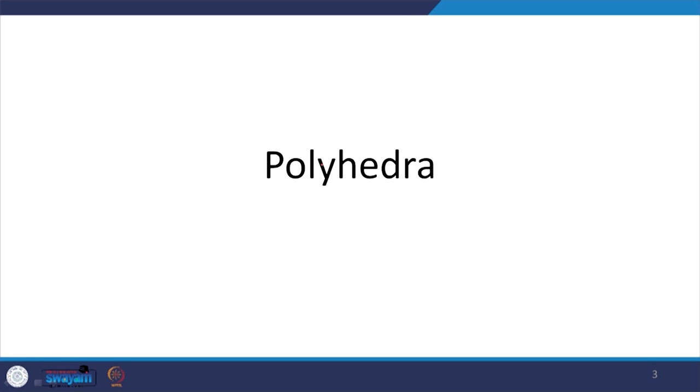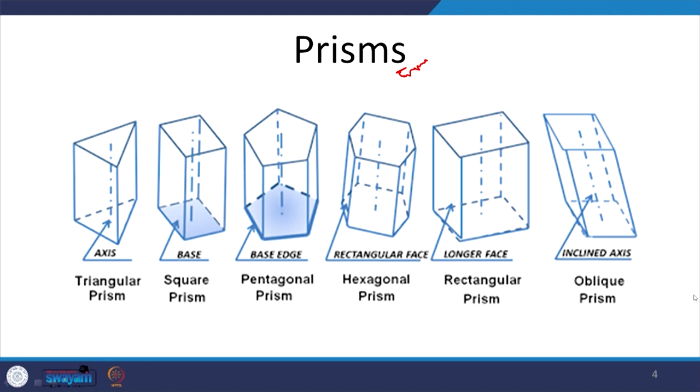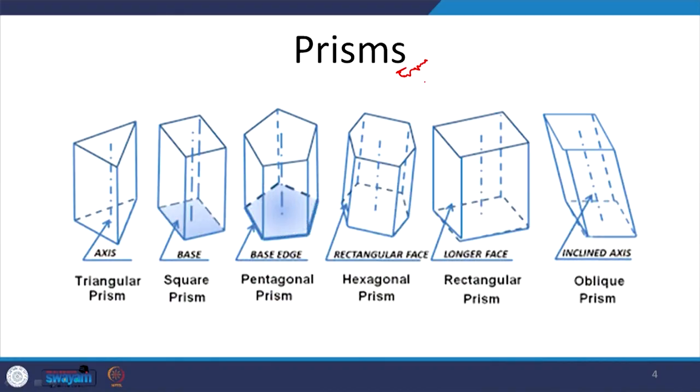Let us first learn about the first group of solids, which is polyhedra. A large number of solids actually come under this category. Many of these solids you must be familiar with. The first group of solids is the prism. A prism is any solid which has a base and that base is extruded along a vertical axis originating from the centre of the base. If you look at the screen, we have different types of prisms here.